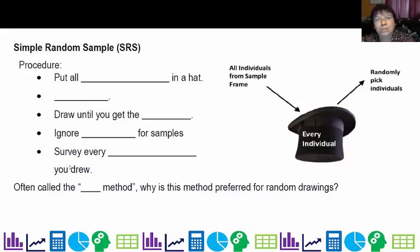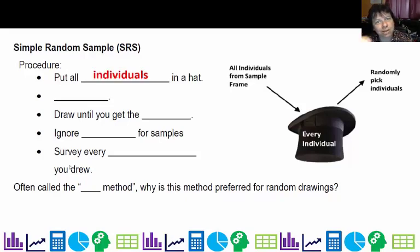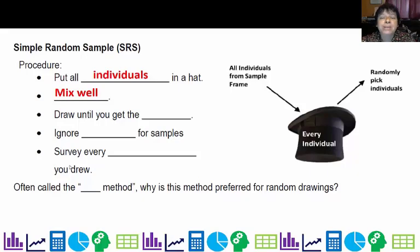The way we normally draw for prizes in class is to use a box or a hat and put the names in. This is the gold standard for drawing a simple random sample — you put all the individuals' names in the hat. If you wrote their names down and put them in alphabetically without mixing, someone might object. You want to mix them well to introduce randomization. Then draw until you get your full sample or all your winners.